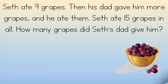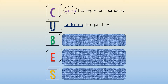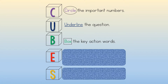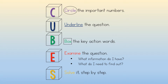Each letter in the CUBES model stands for a different step. C stands for circle — circle the important numbers. U stands for underline — underline the question. B stands for box — box the key action word or words. E stands for examine the question: ask what information do I have and what do I need to find out. Finally, S stands for solve — solve it step-by-step. For this video, you will explore the first four steps in CUBES; solving will come in the next video.